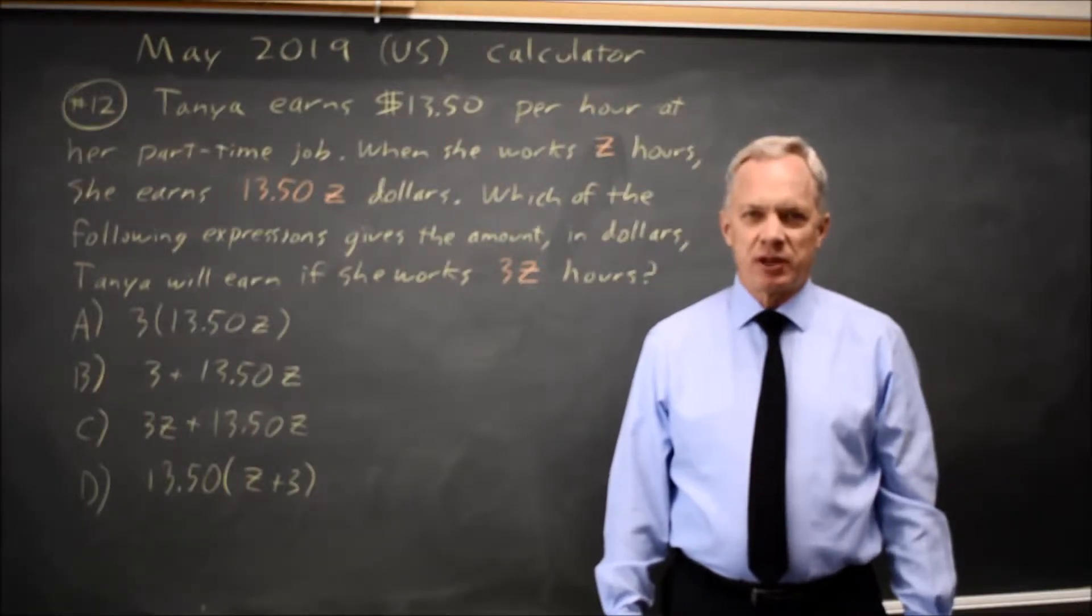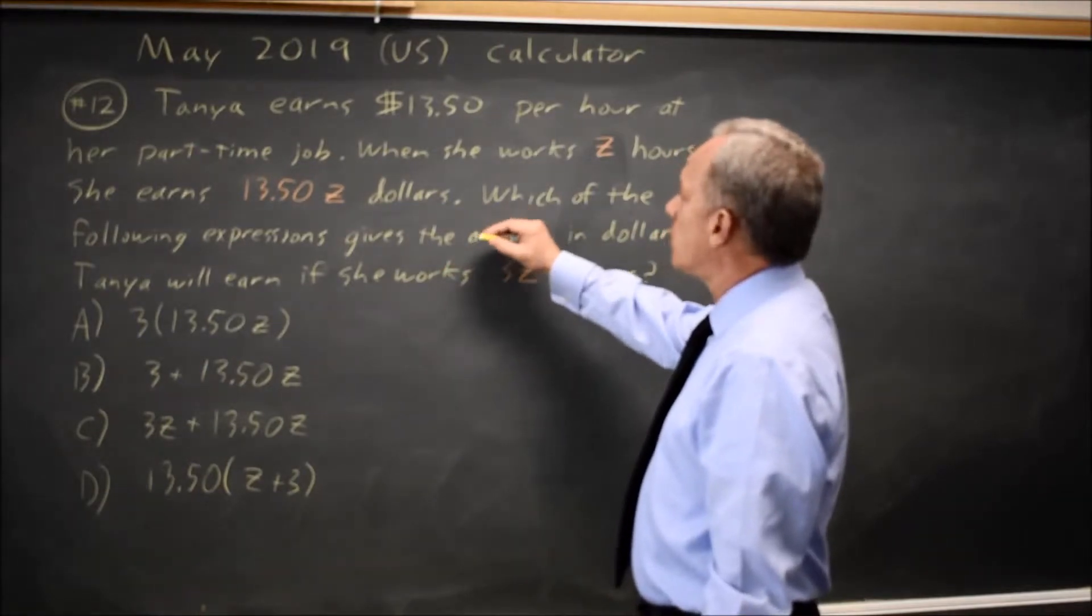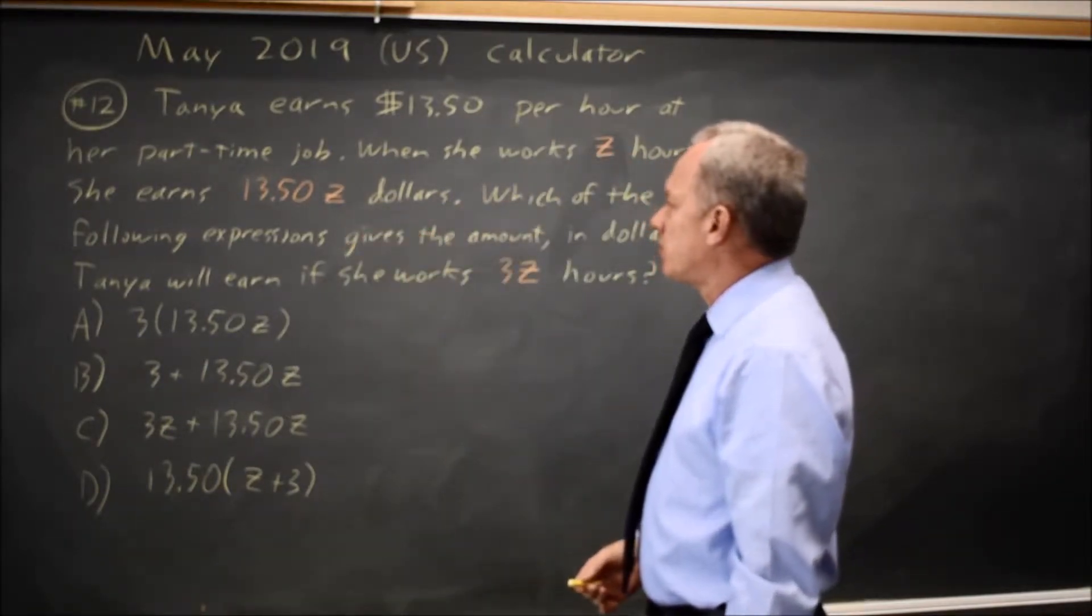This is calculator question number 12. We have a word problem describing Tanya's part-time income, where if she works Z hours, she makes 13.5Z dollars.